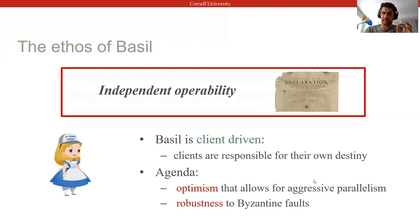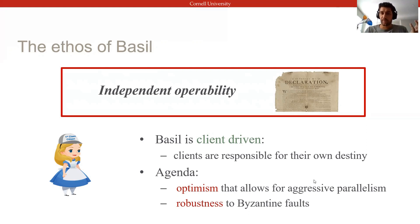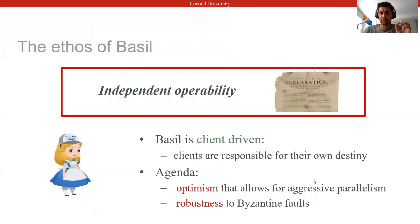As part of this design, Basel tries to strike a balance between optimism — to allow for aggressive parallelism — and yet remain robust to failures. It's not hard to imagine that mixing empowered Byzantine clients and optimism is a slippery slope, and doing so safely and robustly is one of the main challenges in Basel.